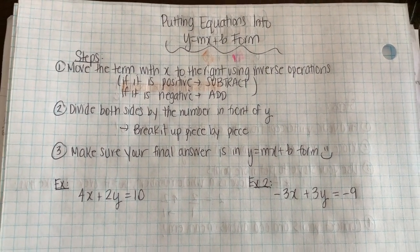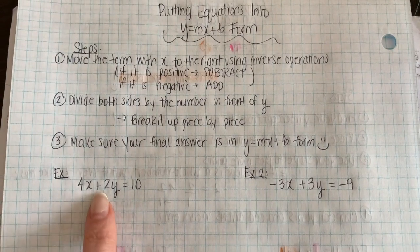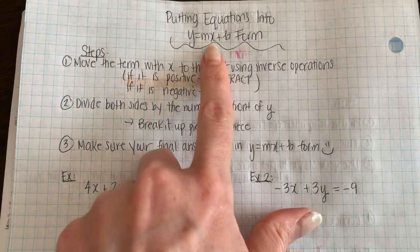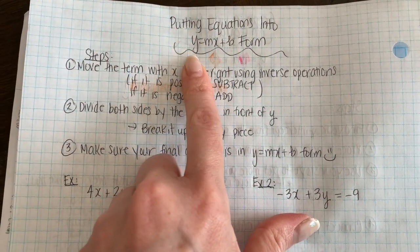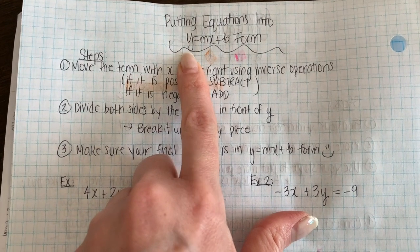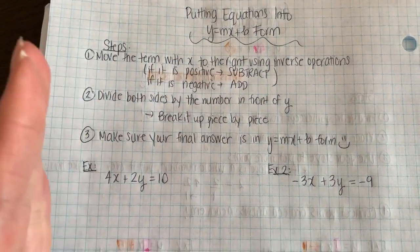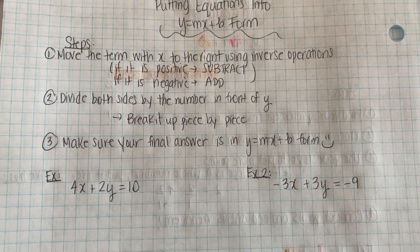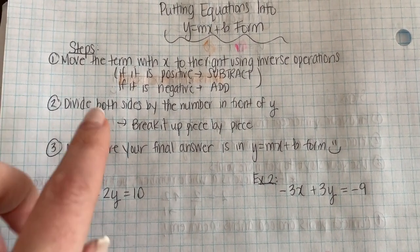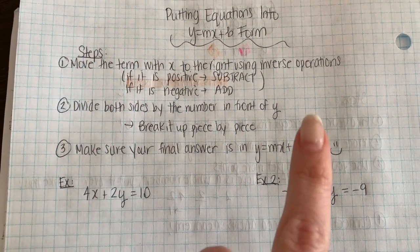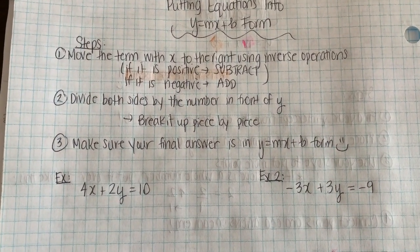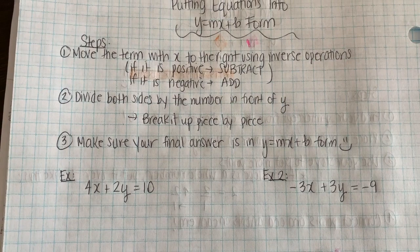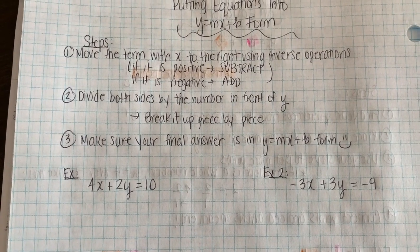So the first step is that we want to get rid of the x over here. It's supposed to be on the right. We need to have only y by itself on the left. So our goal is to get everything else over to the right. So first thing you should do is move the term with the x to the right using inverse operations. So if it's positive, you're going to subtract. If it's negative, you're going to add.